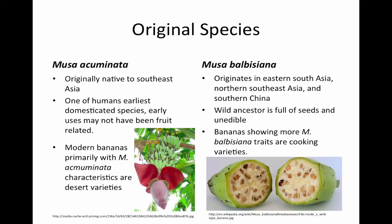The balbisiana, on the contrary, originates north of that area, in the south of China. Its wild ancestor is full of seeds and inedible. Today, bananas showing the balbisiana traits are used for cooking varieties.